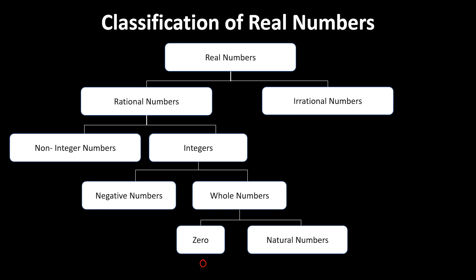Natural numbers are basically counting numbers starting from 1 onwards — 1, 2, 3, 4, and so on. Some examples of natural numbers include 1, 2, and 99. Thank you so much.